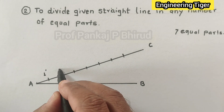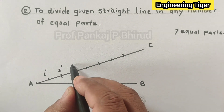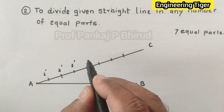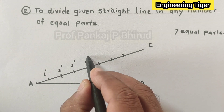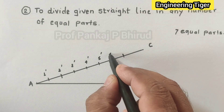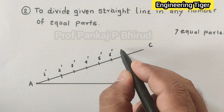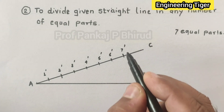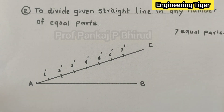Label these points on the AC line as 1 dash, 2 dash, 3 dash, 4 dash, 5 dash, 6 dash, 7 dash.